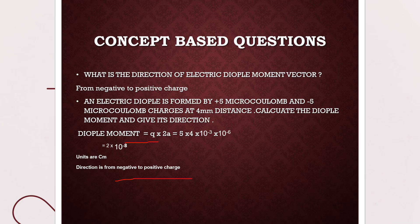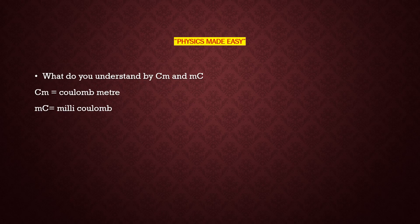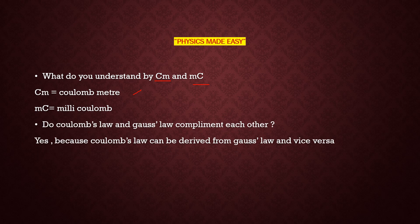We do the calculations and get the final answer; the units are represented in coulomb meter. The next question involves the two terms: cm and mc. They look similar but create a lot of confusion. The difference is that cm means coulomb meter and mc means millicoulomb. The next question: do Coulomb's law and Gauss law complement each other? Yes, of course, because Coulomb's law can be derived from Gauss law and vice versa, as Gauss law is the more basic law.